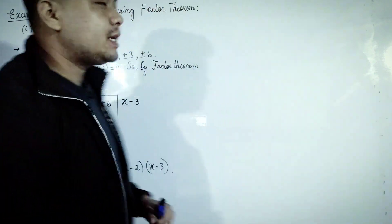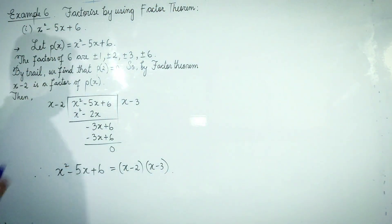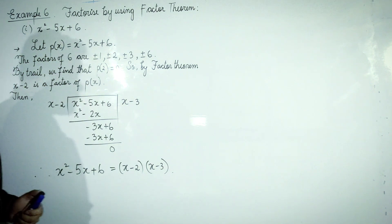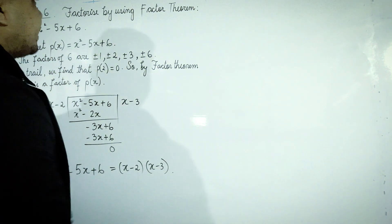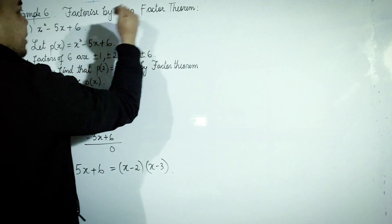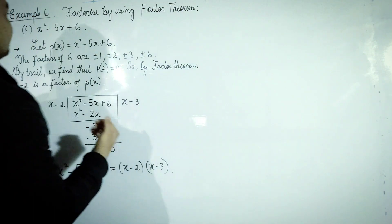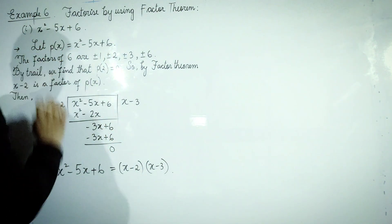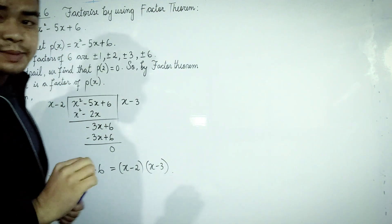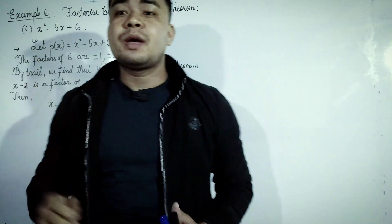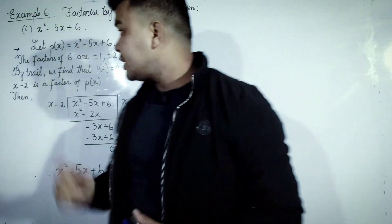Example number six, Roman numeral one. We are going to factorize using the factor theorem. In this case, we have factorized by using the factor theorem.